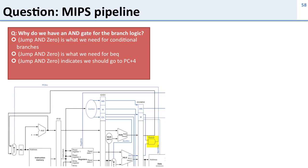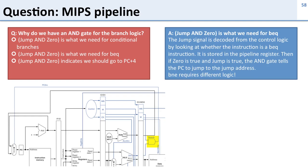Here's a question about the MIPS pipeline: why do we have an AND gate for the branch logic? The reason is this is for branch equal. If the branch signal is true and the ALU output is zero, then we should take the branch on a branch equal. This logic gets the branch signal from the control logic which has been sent through the pipeline, and it gets the zero signal from the pipeline register — the ALU wrote the zero signal into the pipeline register on the previous cycle. So if both are true, you should branch. Note this is the wrong logic if you want to do branch not equals — this is just because we have a simplified processor for these examples.